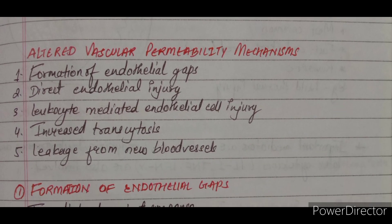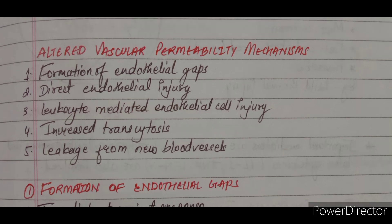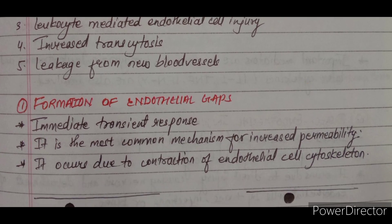There are five mechanisms of altered vascular permeability: number one, formation of endothelial gaps; number two, direct endothelial injury; three, leukocyte-mediated endothelial cell injury; four, increased transcytosis; and fifth, leakage from new blood vessels. The gaps are created from these five mechanisms, and we will see each one by one.